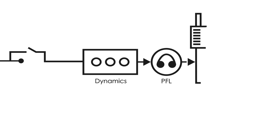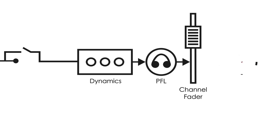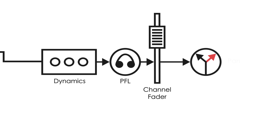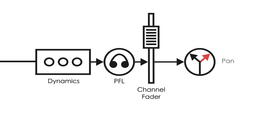The signal then passes to a channel fader, which is used to adjust that channel's specific level during live mixing. Unlike gain, which is set at the beginning and held constant through the mix, the fader is used for fine tune adjustments during mixing. Then the signal passes through the pan, which can change the placement of the channel from left to right in a stereo mix.